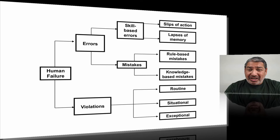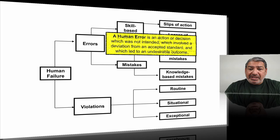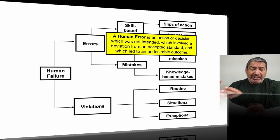Let's define an error. A human error according to HSG 48 is an actionable decision which was not intended, which involved a deviation from an accepted standard, and which led to an undesirable outcome — in other words, someone did something and someone got harmed, or there was an incident or an injury.